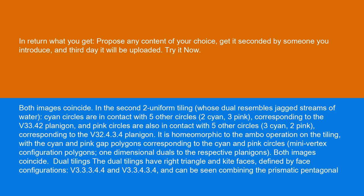It is homeomorphic to the ombo operation on the tiling, with the cyan and pink gap polygons corresponding to the cyan and pink circles, many vertex configuration polygons as one-dimensional duals to the respective planigons. Both images coincide. Dual tilings: the dual tilings have right triangle and kite faces, defined by face configurations.